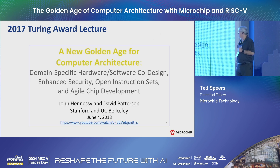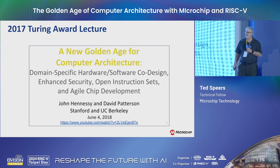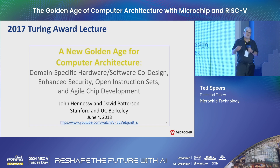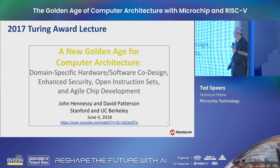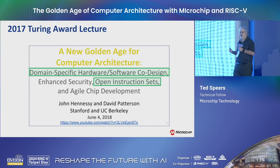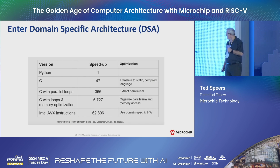Switching over to the golden age framework: this is a Turing Award lecture. Patterson and Hennessy won the Turing Prize in 2017 — the Turing Prize is like the Nobel Prize for computer architecture. They gave a talk called 'A New Golden Age for Computer Architecture' and talked about four things. I'm going to focus on two of them: domain-specific hardware co-design and open instruction sets as the pillars of the golden age.